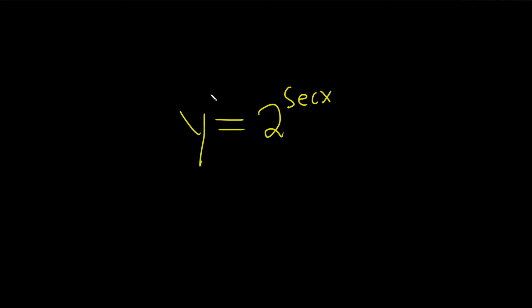In this problem, we're being asked to find the derivative of y equals 2 to the secant x by using what's called logarithmic differentiation. So the question is specifically asking us to do it that way, so we'll do it that way. There's other ways of doing it, and again, the only reason we're doing it that way is because the question wants that.